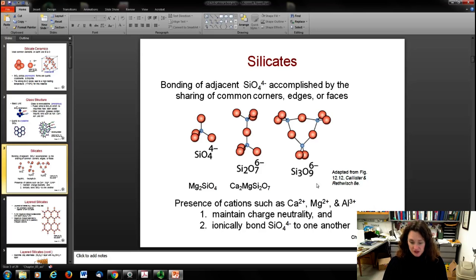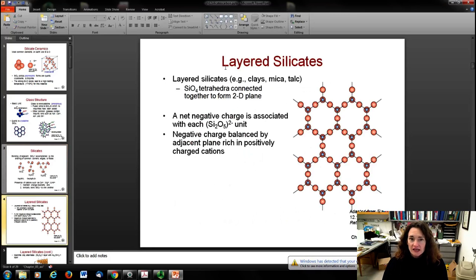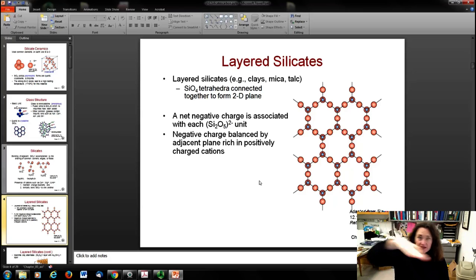You've also got layered silicates out there. You're probably familiar with mica, some of the clays, or talc. In those, you have tetrahedra connected together to form a two-dimensional plane. Each negative charge is associated with the Si2O5 units sticking up out of the plane, balanced by an adjacent plane rich in positively charged cations. The bonding between planes is much weaker than within the plane, so these materials tend to peel off, like mica or clays.